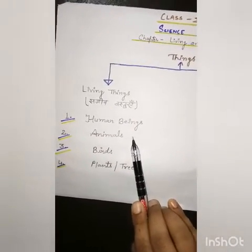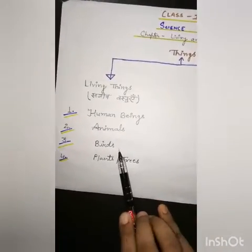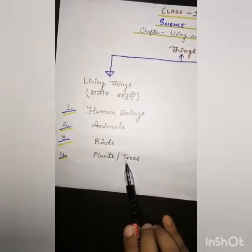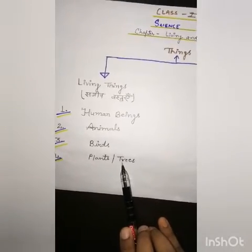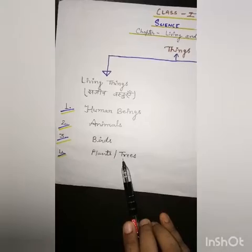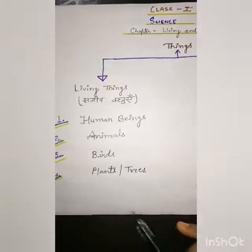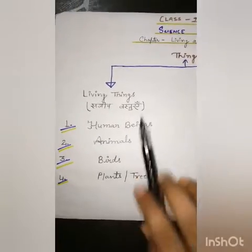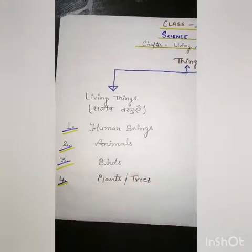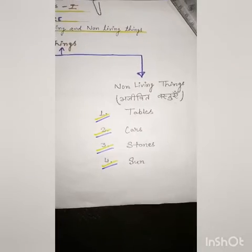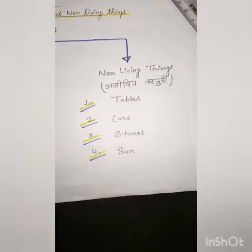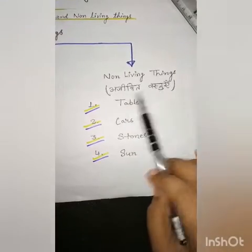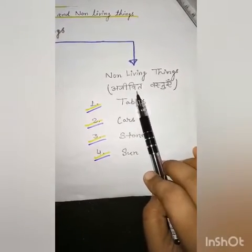Examples of living things include: animals (janwar), birds (pakshi), and plants and trees. Plants and trees are also living things. Now we learn about non-living things — yani ki ajeevit vastu — jo saans nahi le sakti, jo badh nahi sakti, jo ek jagah se doosri jagah khud nahi ja sakti.